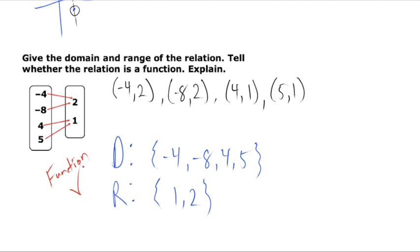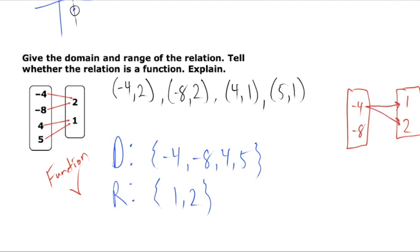What would be not a function? If we redrew the mapping diagram with negative 4, negative 8 on the left and 1 and 2 on the right, but negative 4 has arrows going to BOTH 1 and 2, while negative 8 just goes to 2 — the fact that the input of negative 4 goes to two separate output locations means this is not a function. It's okay to end up at the same place; it's not okay for a single input to go to multiple places.